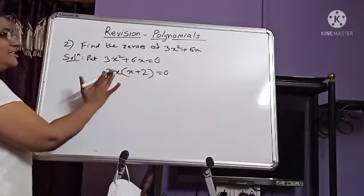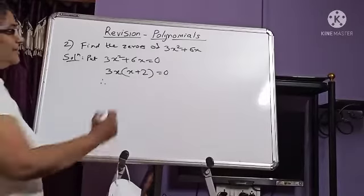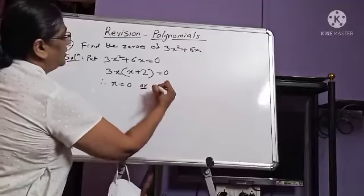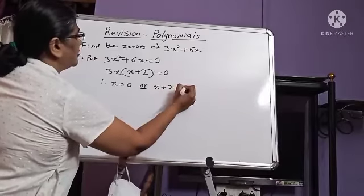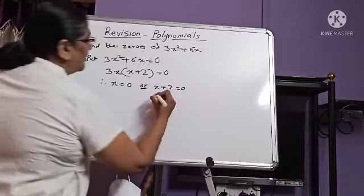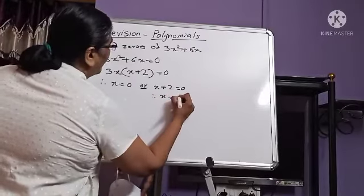3 into x into x plus 2. Therefore, 3 is the constant, 3 can't be equal to 0. That means x is equal to 0 or x plus 2 is equal to 0. So x is equal to 0 or x is equal to minus 2.